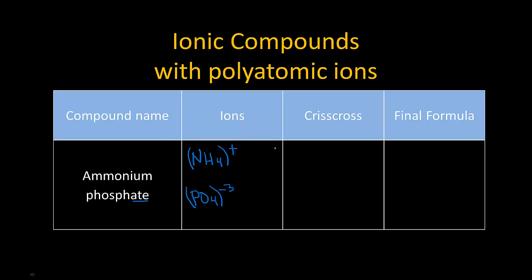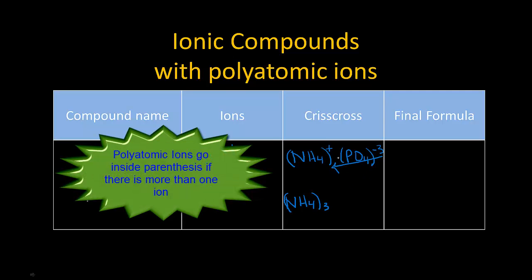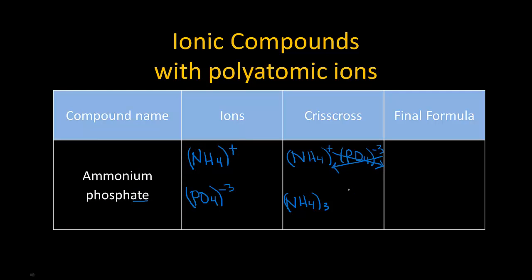Now let's crisscross. The metal, or in this case the positively charged cation, comes first. We have NH₄ with a plus one charge and PO₄ with a minus three charge. The three goes down by NH₄, and since there is more than one NH₄, we put parentheses around it. The one goes down by PO₄ — since there is only one, we do not need parentheses around PO₄. The final formula is (NH₄)₃PO₄.